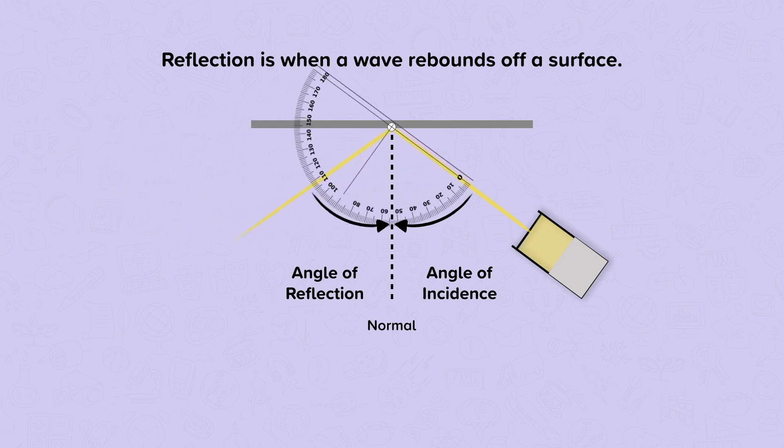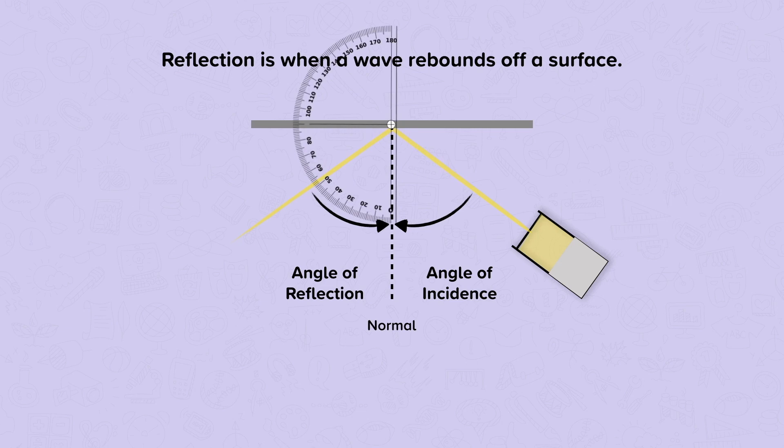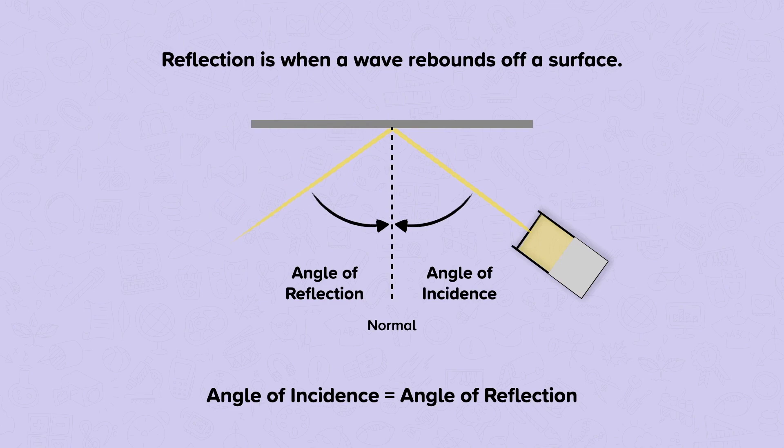So our angle of incidence is 54 degrees, and our angle of reflection was also 54 degrees. So the angle of incidence equals the angle of reflection.